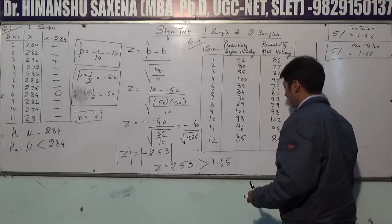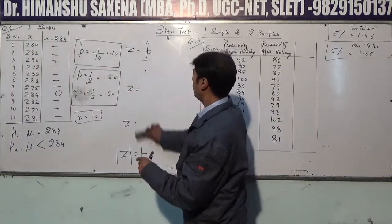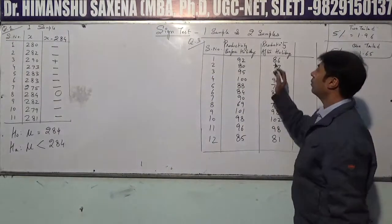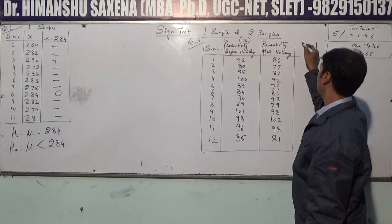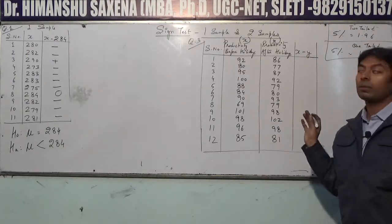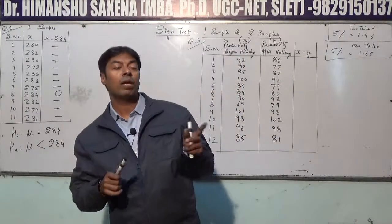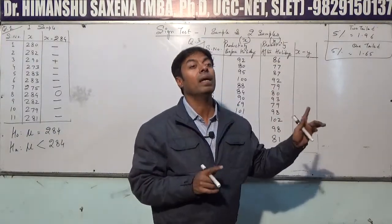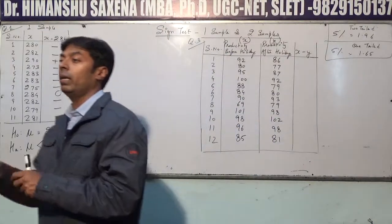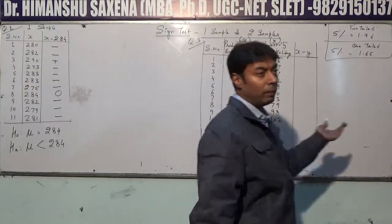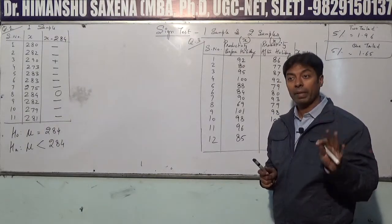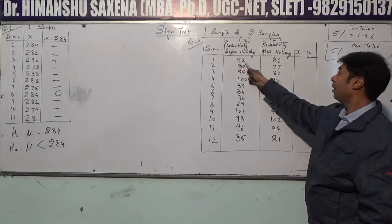For the two-sample sign test (question number 3), we denote the first column as X and the second column as Y, then subtract the second from the first (X − Y). The data is before and after. Normally we would apply a paired t-test, but this question specifically asks for the sign test.